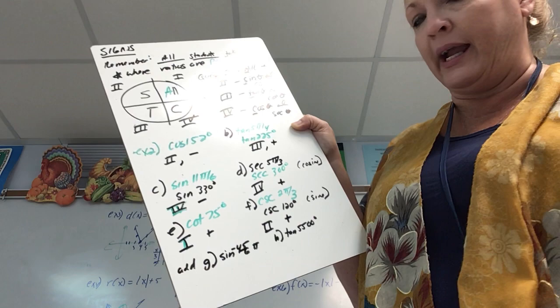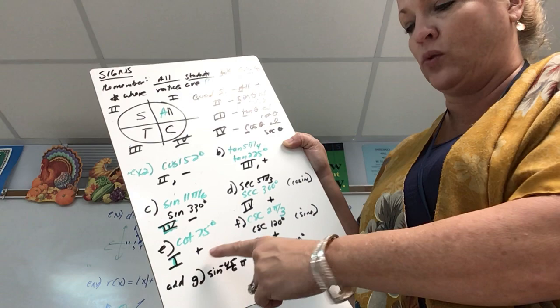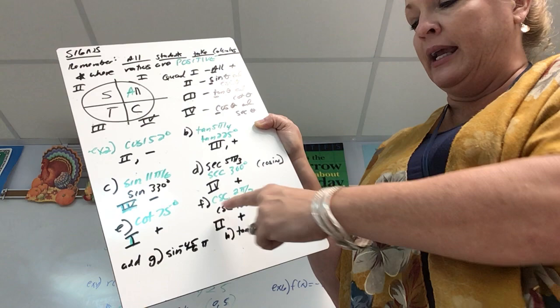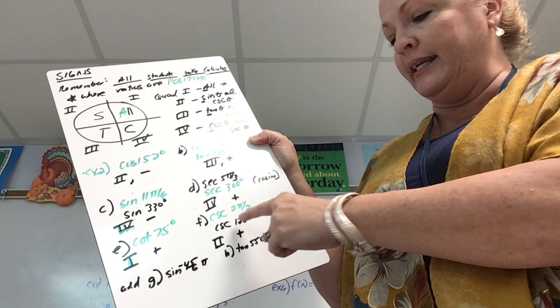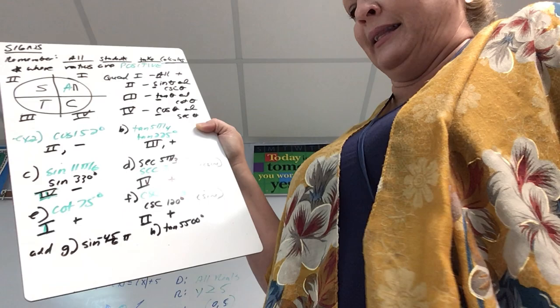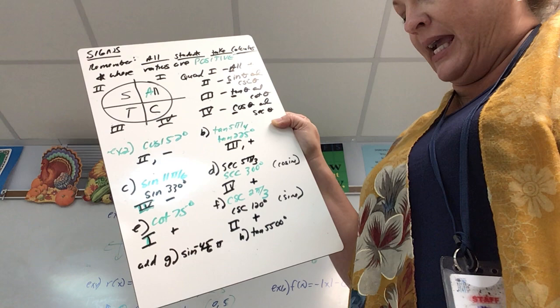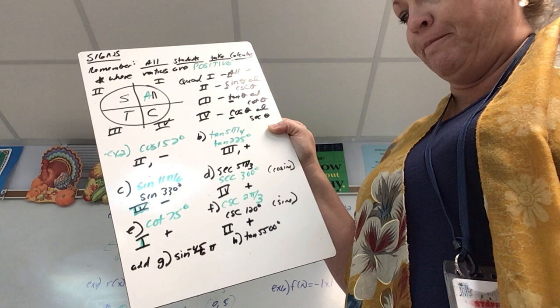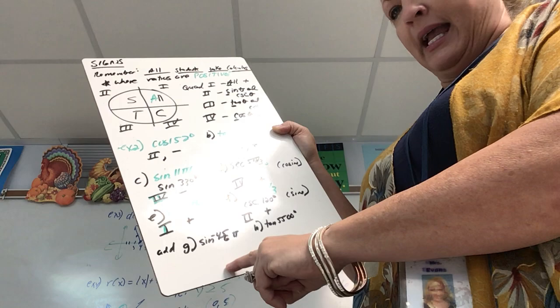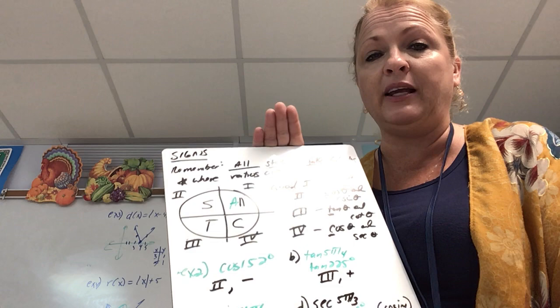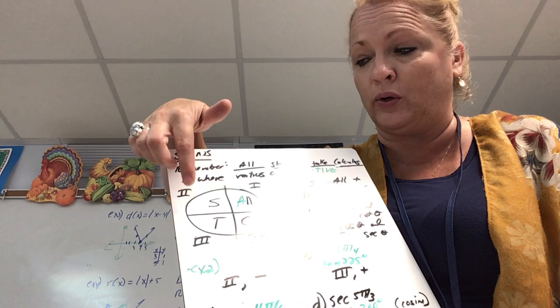Secant of 5π/3: that's 300°, quadrant four. For reciprocal functions, refer to the partner — secant's partner is cosine. Cosine is positive in quadrant four, so secant is also positive. Cotangent of 75°: that's quadrant one, so everything is positive. Cosecant of 2π/3: that's 120°, quadrant two. Cosecant's partner is sine, which is positive in quadrant two, so cosecant is positive. Try the sine of -4(5π/6) and the tangent of 5500° — convert to degrees and use the quadrant rules.